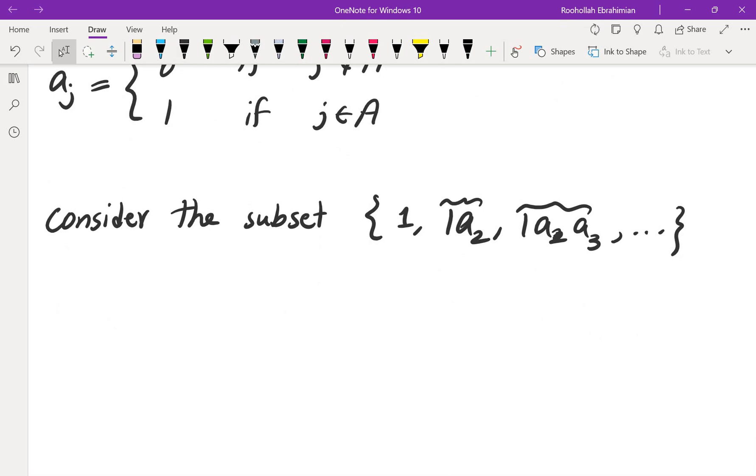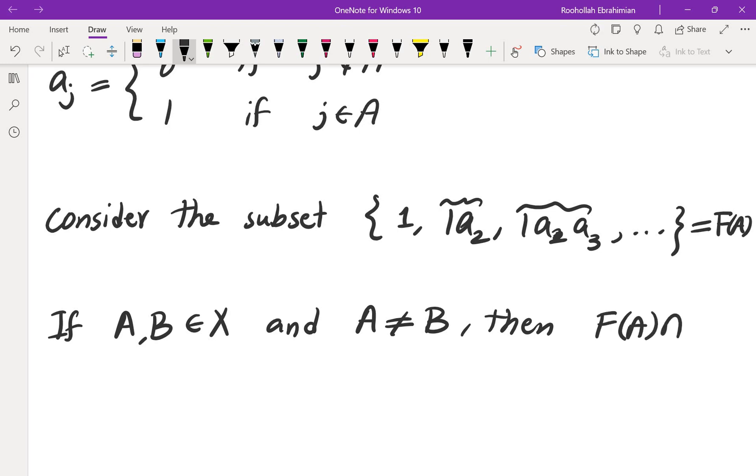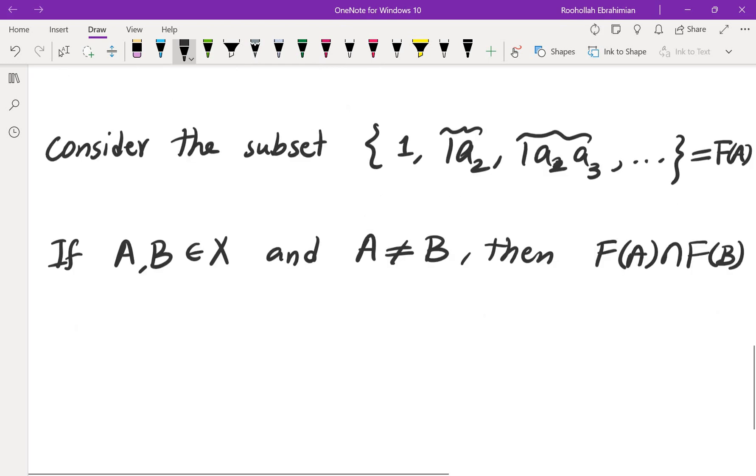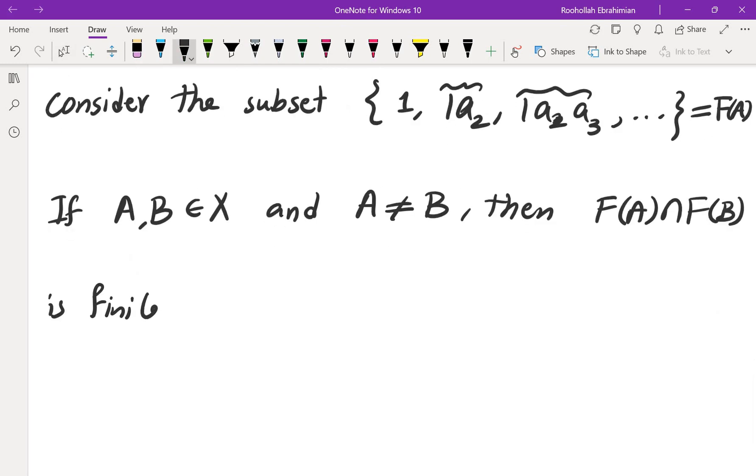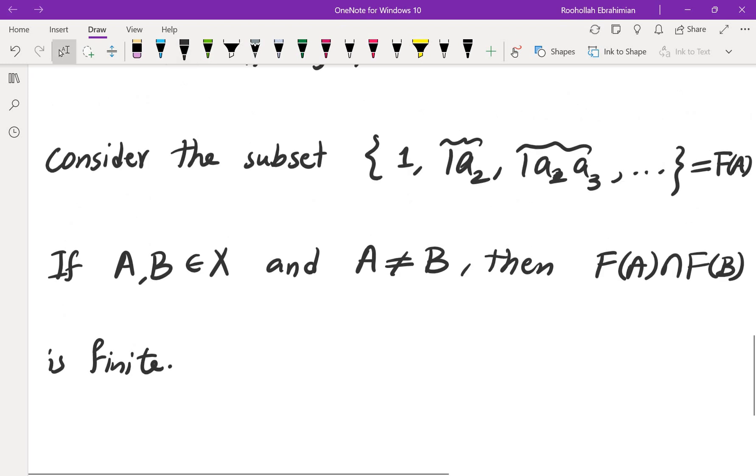Now if I take two different subsets. If A and B are in X and A is not equal to B, then let me call this one maybe F of A. Then F of A intersection with F of B is finite. Why? Because at some point they're going to have a different element. They're going to differ at some point. And after that point all of the rest of the elements are going to be distinct. So that intersection is finite.